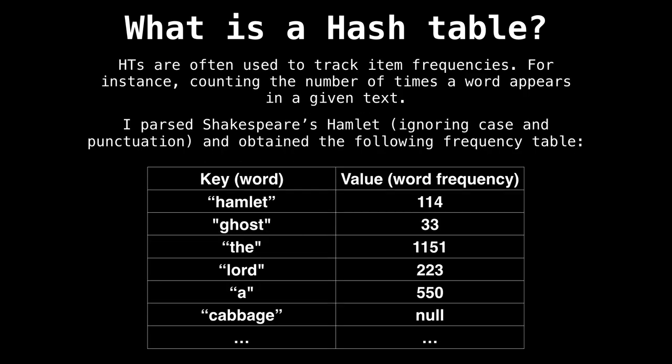All of the keys have to be unique, the values don't have to be unique. For example, Micah's favorite color is purple, but also Leah's favorite color is purple. We often use hash tables to track item frequencies.